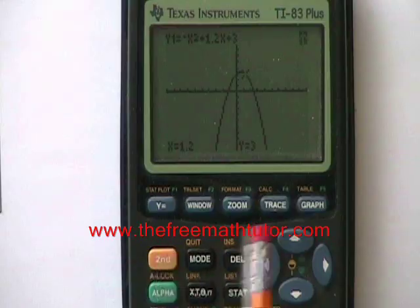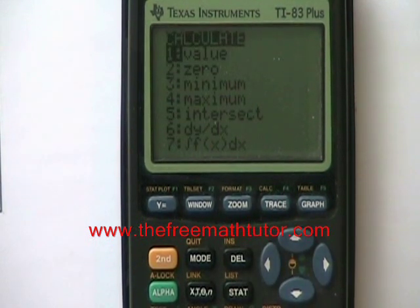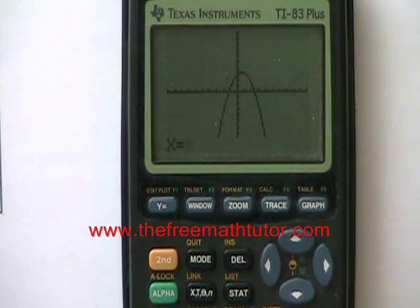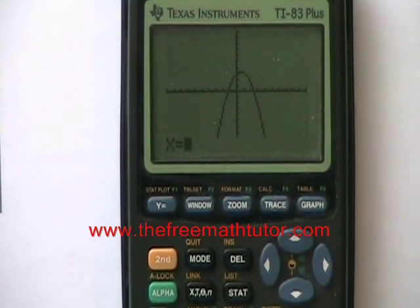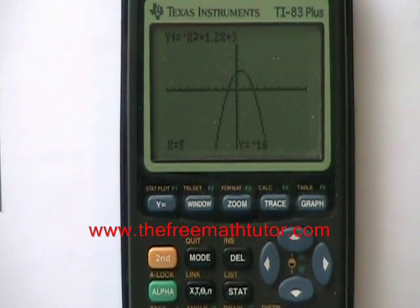Let's find one more point. Second trace, I'm hitting enter for value again. This time I'm curious to know what is the y-coordinate when the x-coordinate is 5. So x equals 5, hit enter. And the y is negative 16.